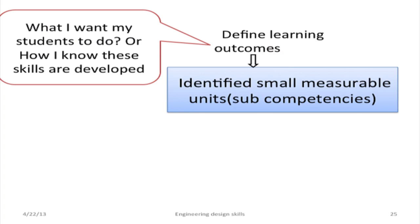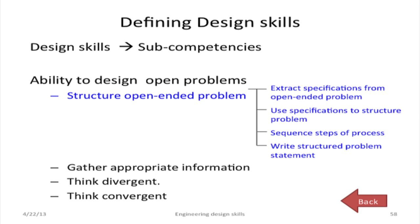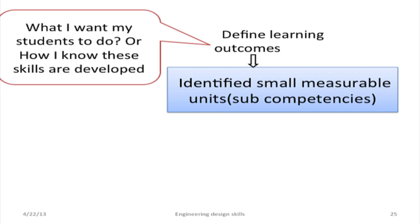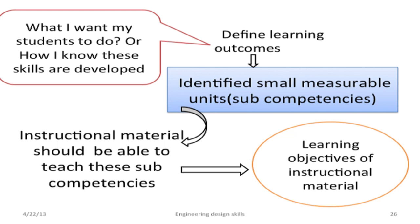Then, what exactly do I want my students to do with this design skill? Since design skill is a broad concept, I need to define learning outcomes. I identified small measurable units for structuring open-ended problems — there are four measurable units which I named as sub-competencies. The design skills identified include: structure open-ended problem, gather information, think convergent, and think divergent. I then converted these into sub-competencies. My instructional material should teach these sub-competencies, and they now form the learning objectives of my instructional material. But is identifying learning objectives sufficient? Definitely not, because the process is still incomplete to prove it is sound.